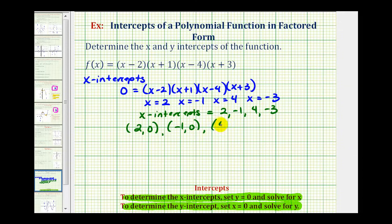If the x intercept is four, that would be the point four comma zero. And if the x intercept is negative three, the point would be negative three comma zero. So here are the x intercepts of our polynomial function.